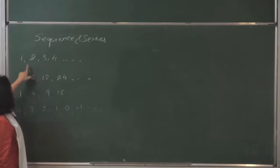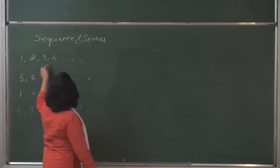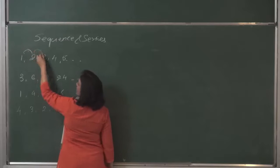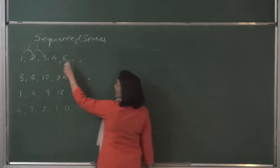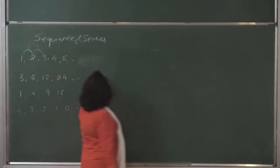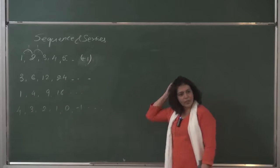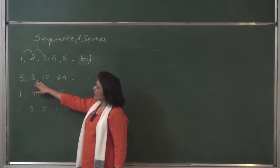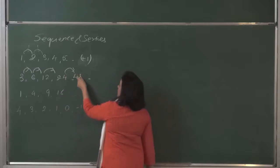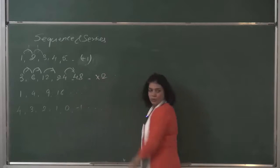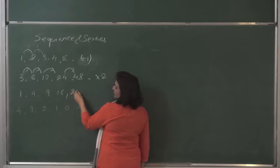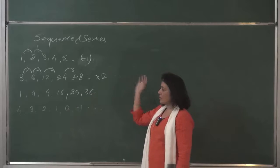In my first example, each number is increasing by 1. So the next number will be plus 1: 1 plus 1 is 2, 2 plus 1 is 3. It is constantly increasing by 1, so the rule is simply plus 1. In the second example, each term is multiplied by 2: 3, 6, 12, 24, 48. The third pattern shows it is the square of natural numbers, so my fifth term will be 25 and the sixth term will be 36. These are basics we have learned in the previous standard.